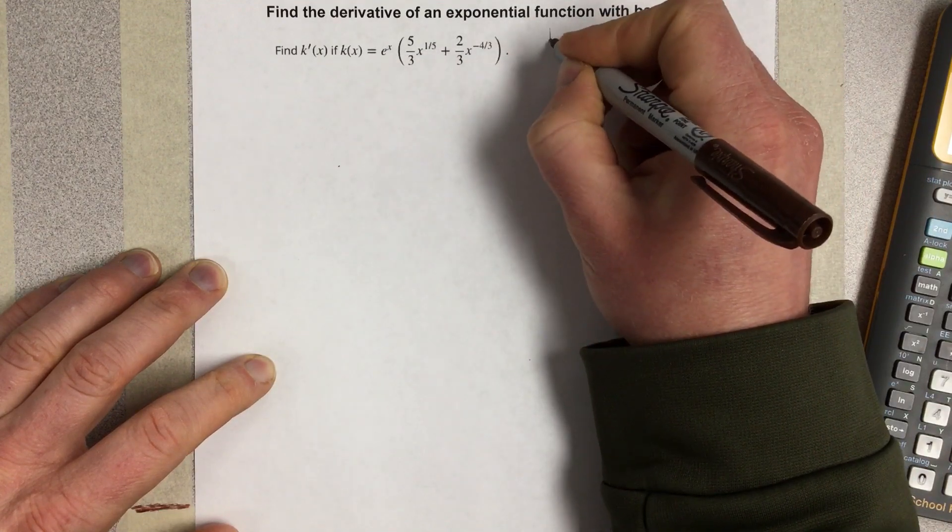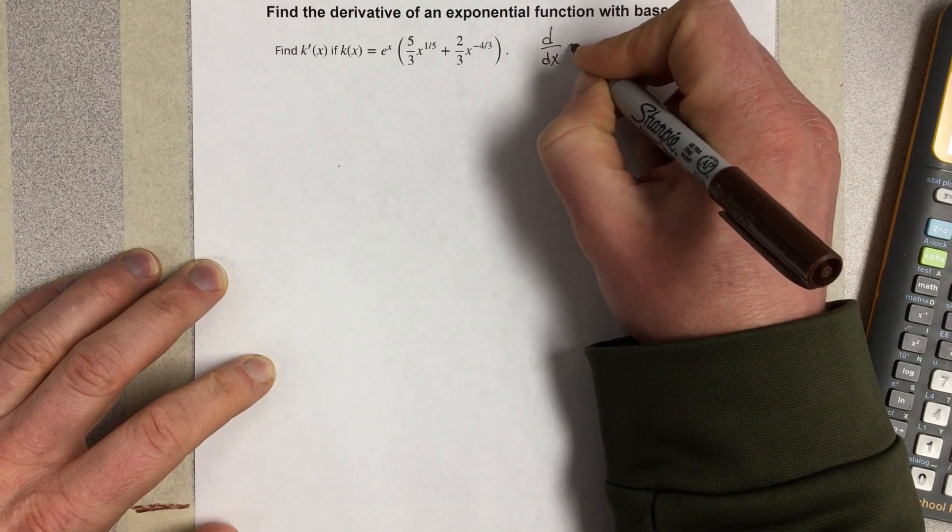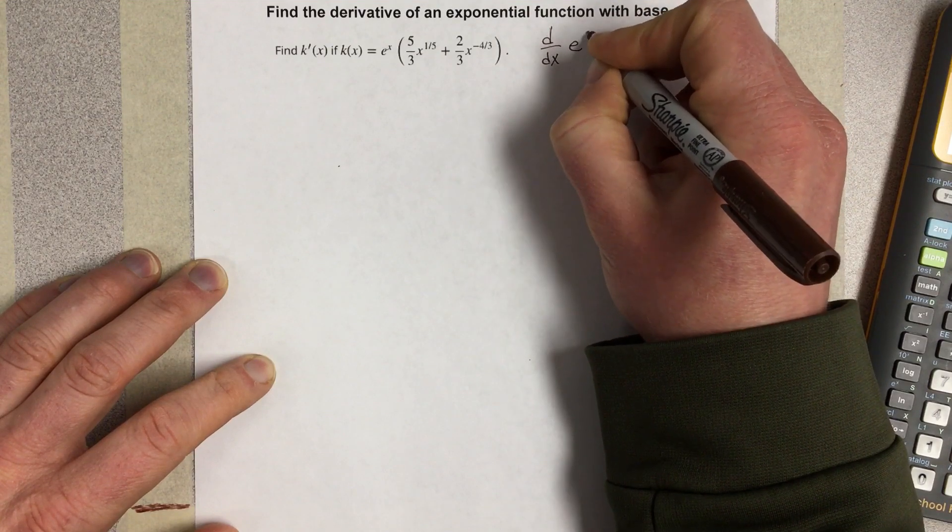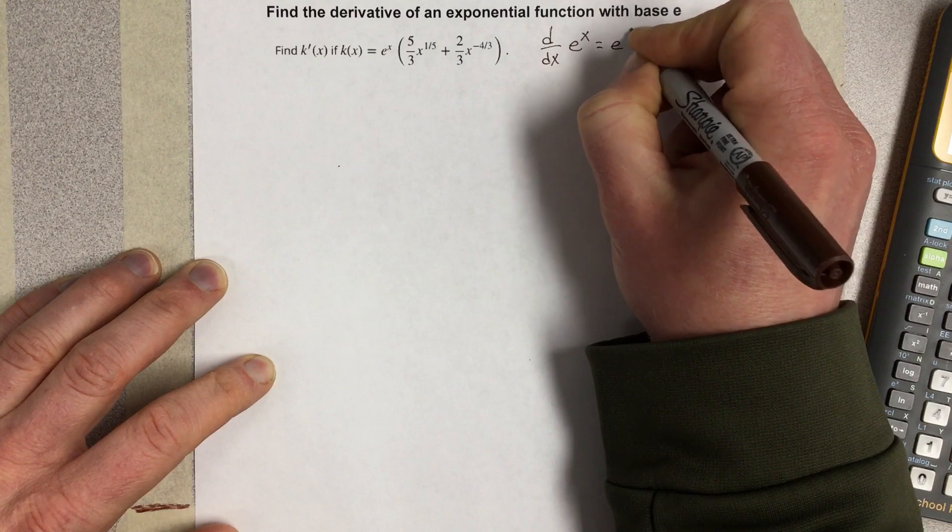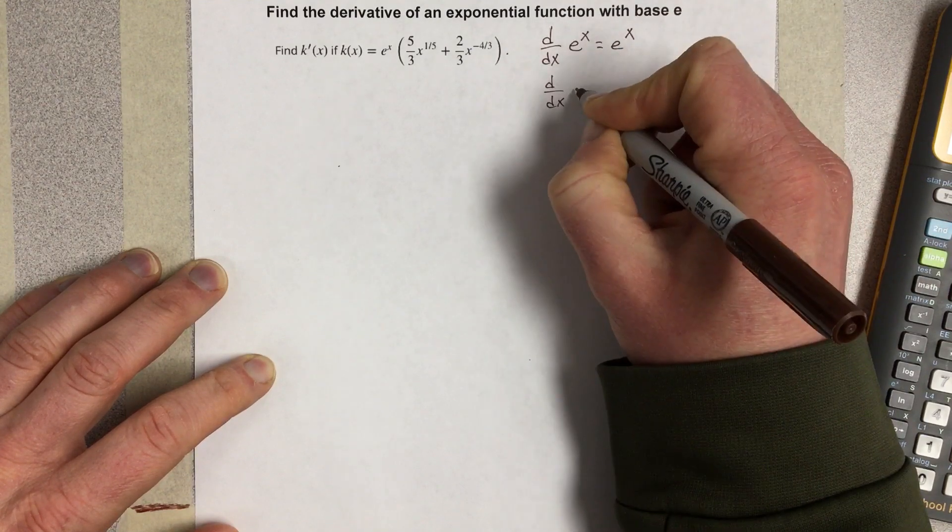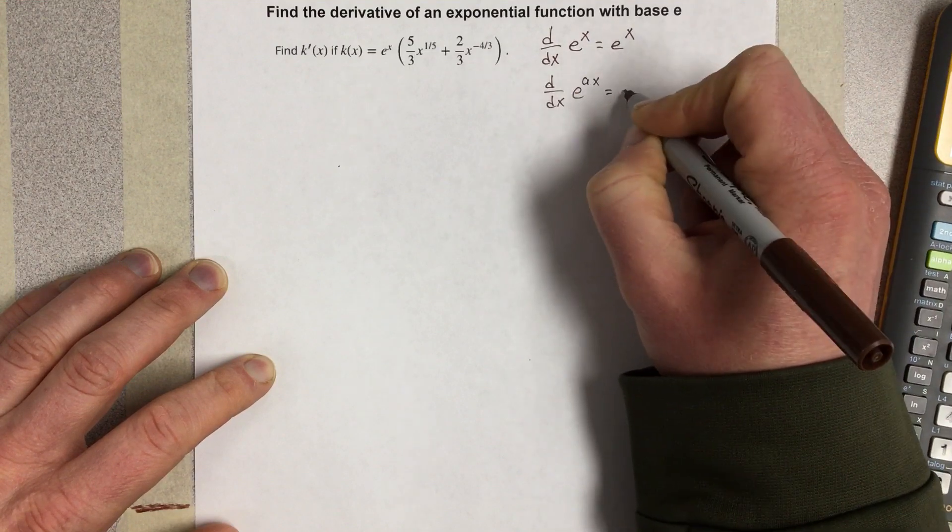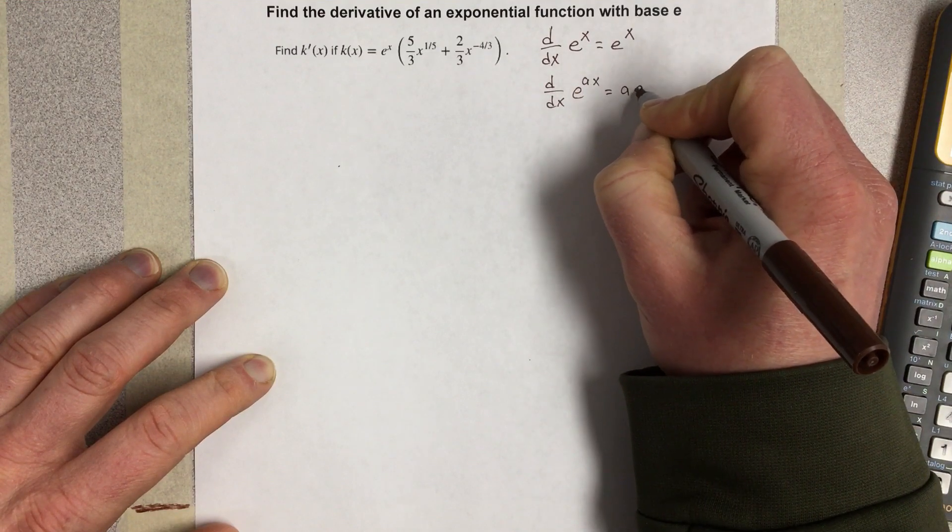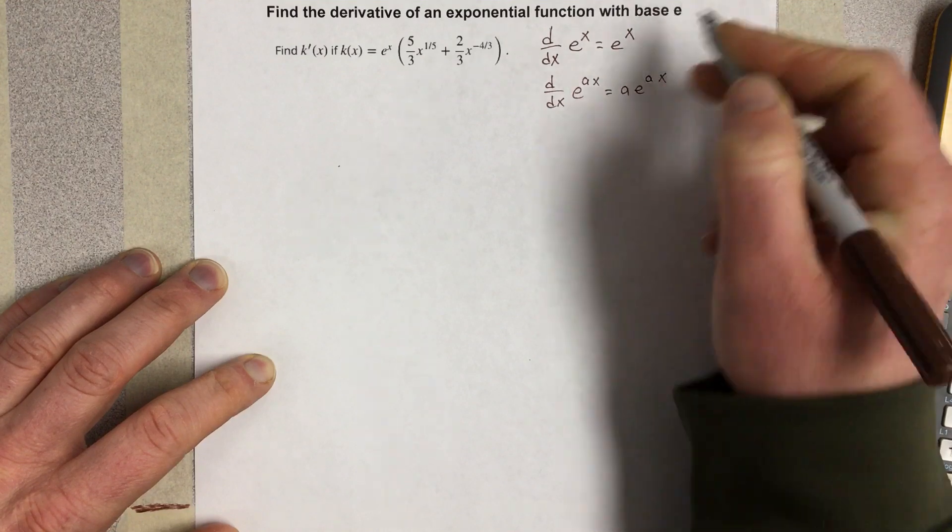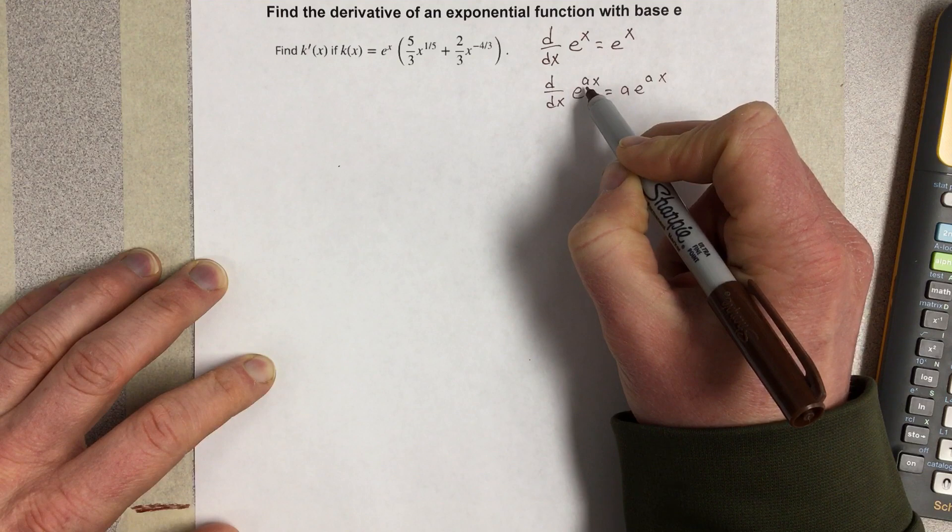So first of all, the derivative of e to the x is e to the x. And the derivative of e to the ax is going to be a times e to the ax, because we have to use chain rule on this exponential.